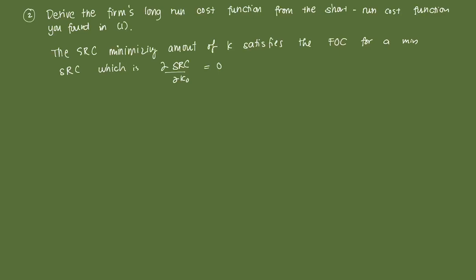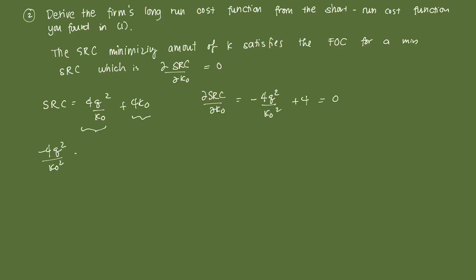Our short-run cost function is 4Q²/K0 + 4K0. We take the partial derivative with respect to K0. Differentiating the first term gives -4Q²/K0², applying the quotient rule. The derivative of the second term with respect to K0 is just 4. Setting this equal to zero: -4Q²/K0² + 4 = 0.